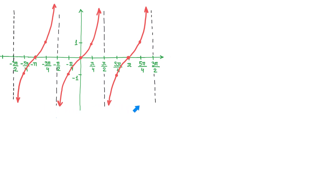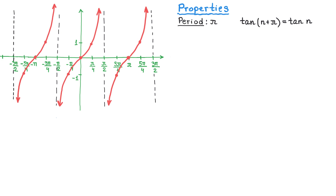Here we have the graph over 3 periods — the original one, plus one more period to the left and another to the right. Now, let's talk about the properties of this graph. The first one is the period of the tangent function is pi. This also means that tangent of n plus pi equals tangent of n. For example, we know that tangent of pi over 4 is 1. If we take pi over 4 and add pi, we get 5 pi over 4, and at this value, tangent is also 1.